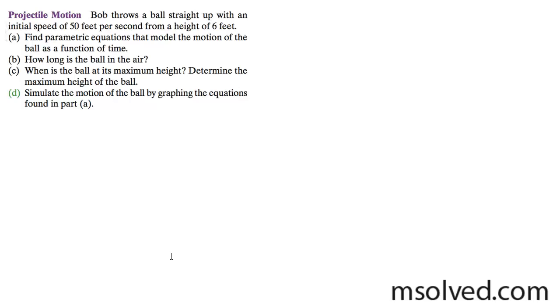So we have this story problem here. To get a general idea, first off, finding a parametric equation that models the motion of the ball as a function of time. It's going to be x equals 3, and y is going to equal negative 16t squared plus 50t plus 6, and I'll explain that.